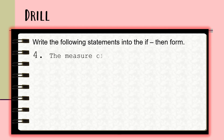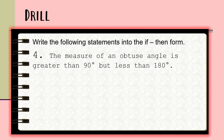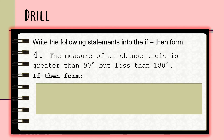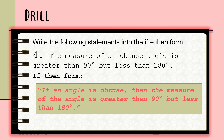For number four: 'The measure of an obtuse angle is greater than 90 degrees but less than 180 degrees.' Transform this into an if-then form. You have 15 seconds to answer. The if-then form is: 'If an angle is obtuse, then the measure of the angle is greater than 90 degrees but less than 180 degrees.'